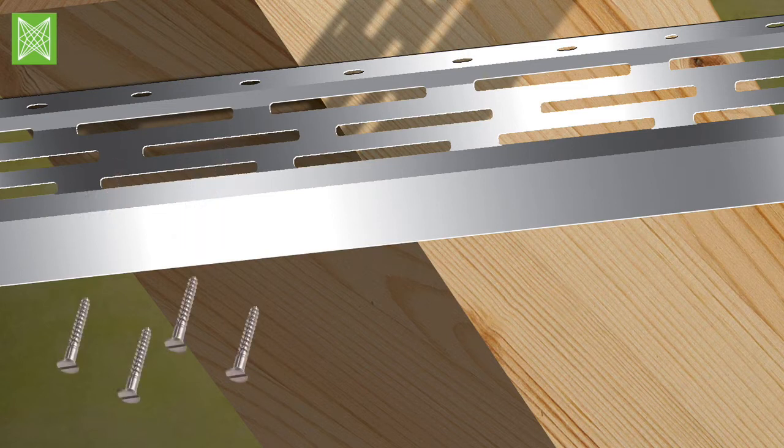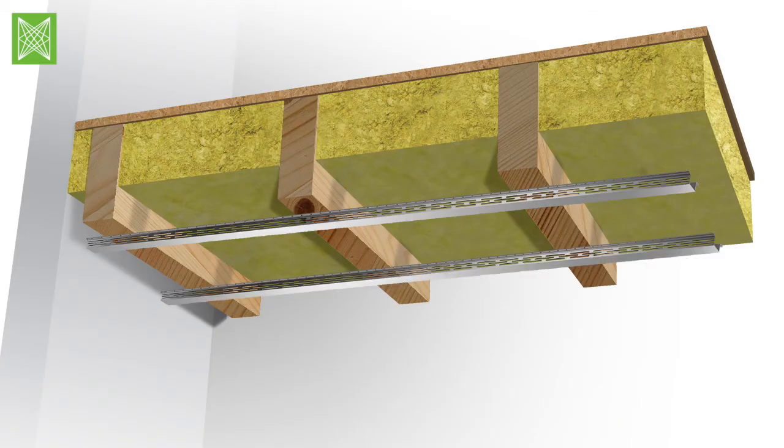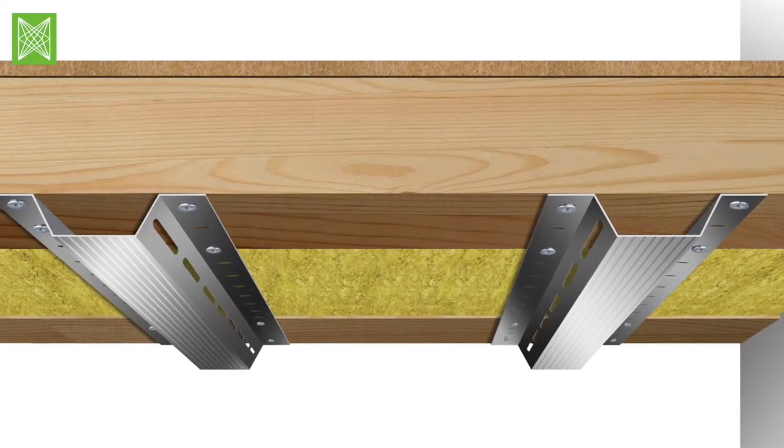Use two fixings either side of the HUSH Deep Resilient Bar to hold the resilient bar in place and carry the load of the plasterboard lining. Repeat the fixing process until all HUSH Deep Resilient Bars are in place at required centers.